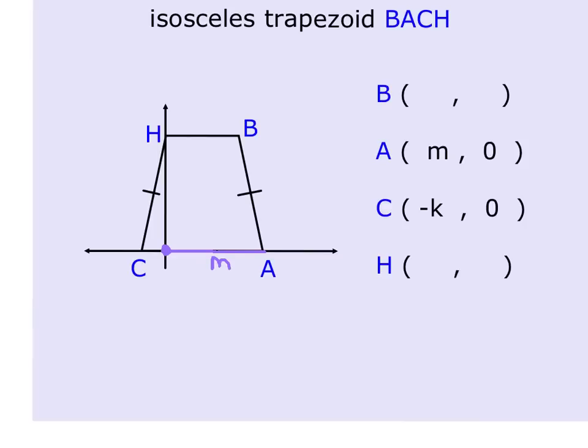And the distance from (0, 0) to the left to get to point C is k units, because that ordered pair is (-k, 0). So what that tells us is I can draw a congruent triangle over here and know that if this is k, then this distance is also k.